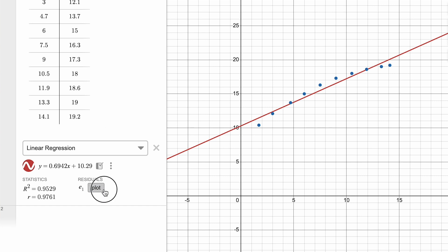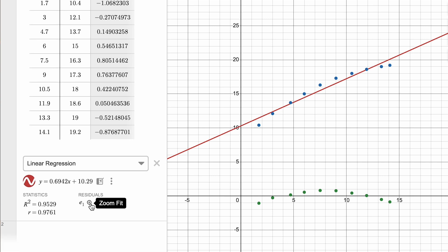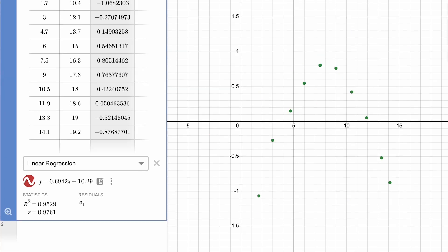There is also an option to plot the residuals, which represent the vertical distance between our data points and the model. By clicking Zoom Fit, we can get a better view of our residuals and observe that the points in the middle of our data set are higher than the calculated regression line and the outside points are lower.